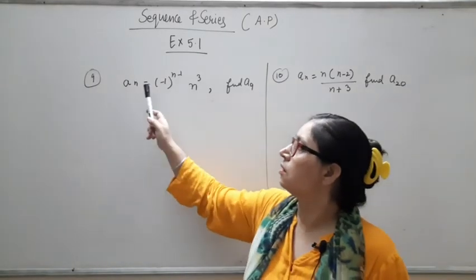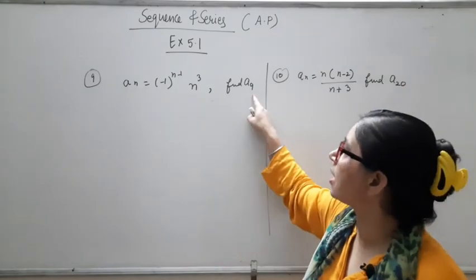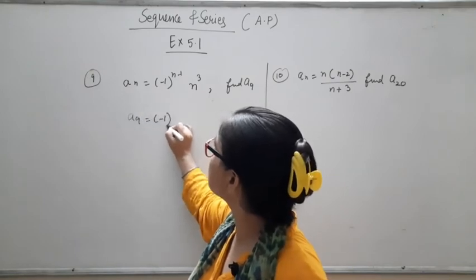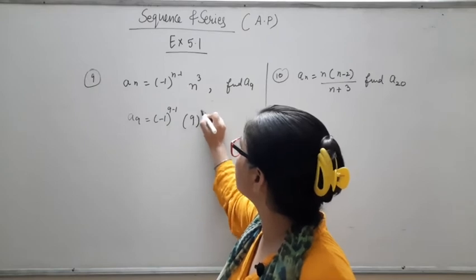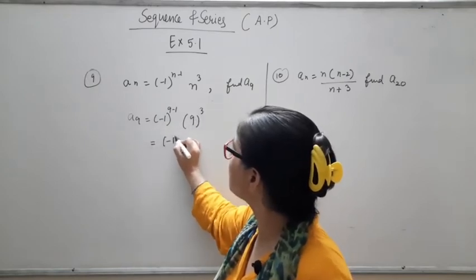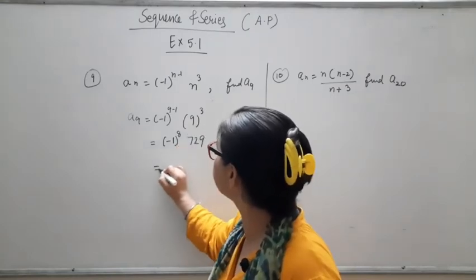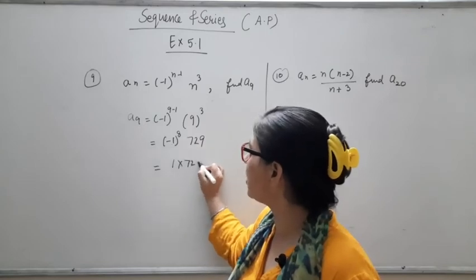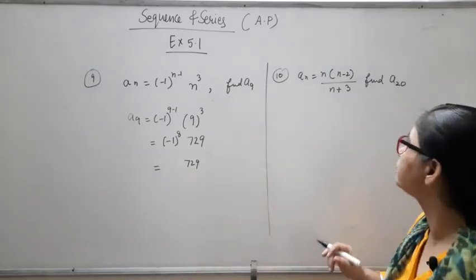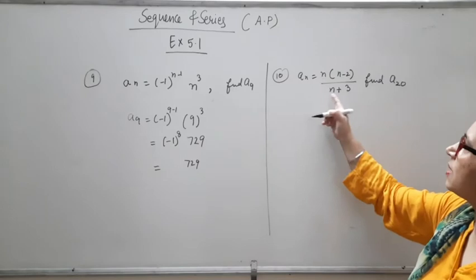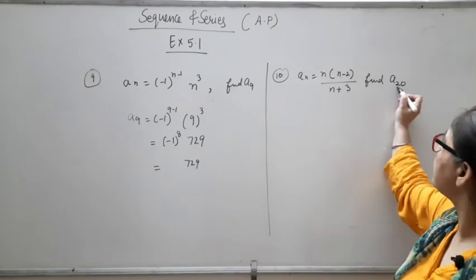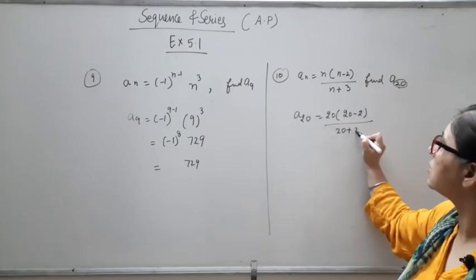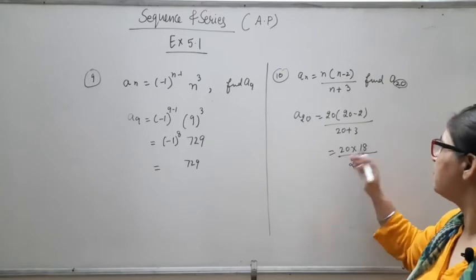In question 9, you are given the nth term formula and must find the 9th term. A9 = (−1)^(9−1) × 9^3 = (−1)^8 × 729 = 1 × 729 = 729. In question 10, find the 20th term: A20 = 20×(20−2)/(20+3) = 20×18/23. Simplify this yourself.